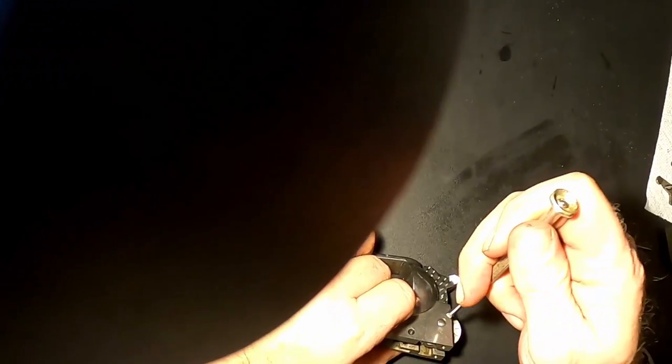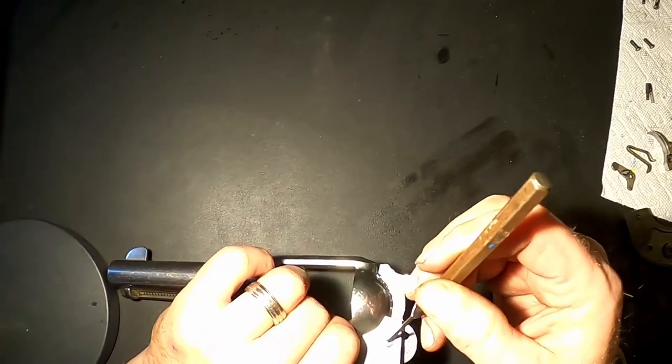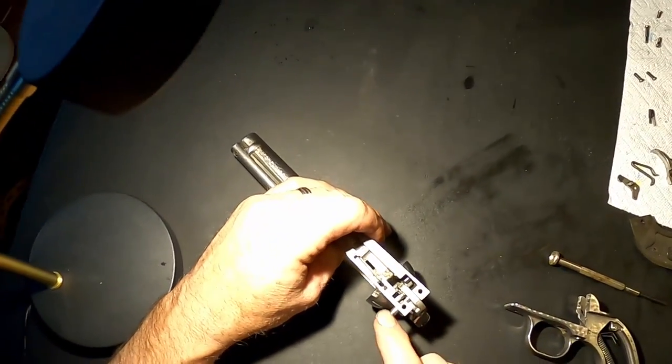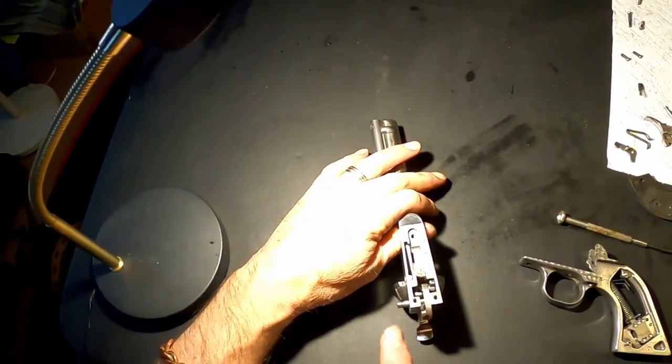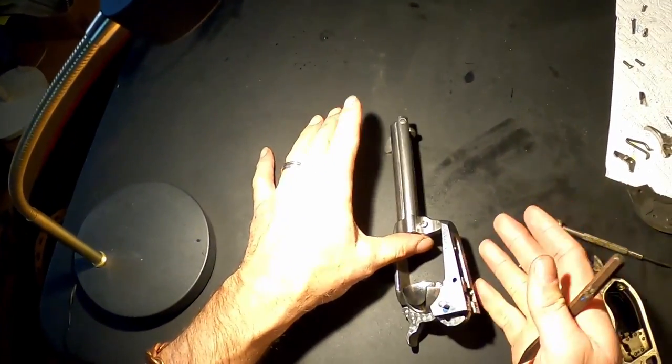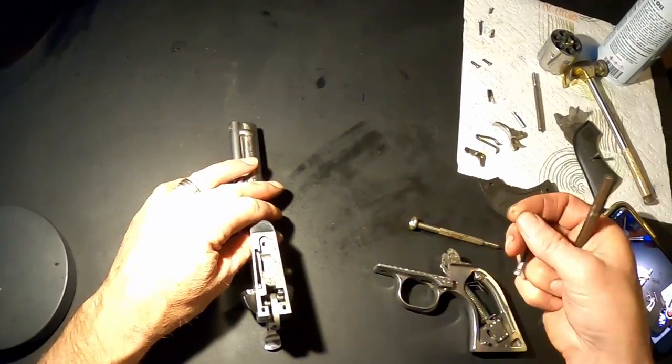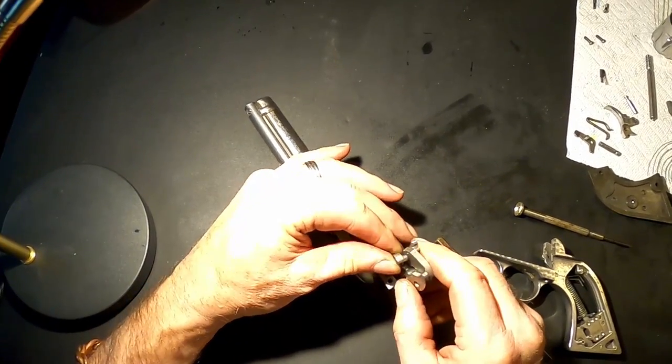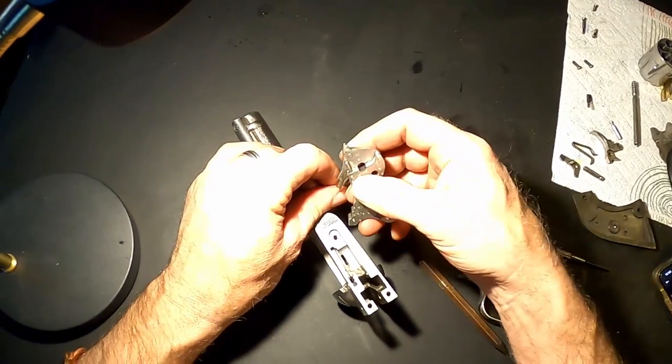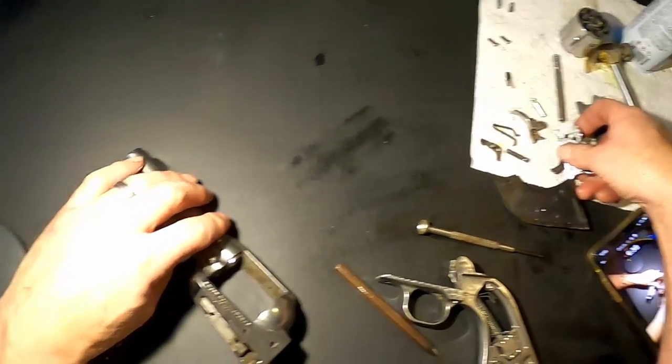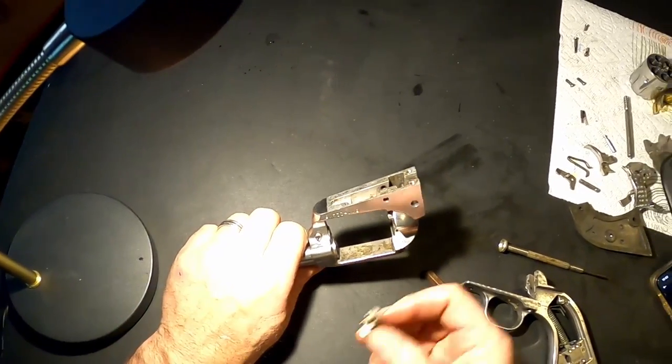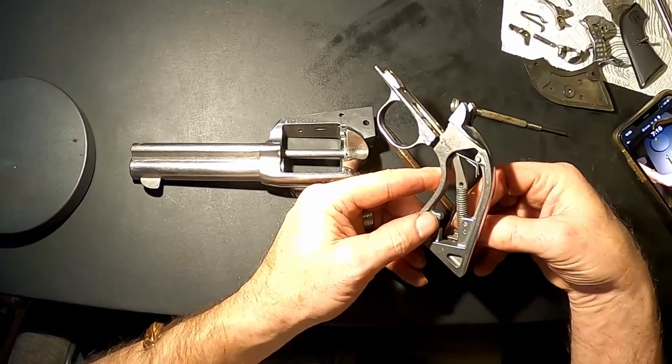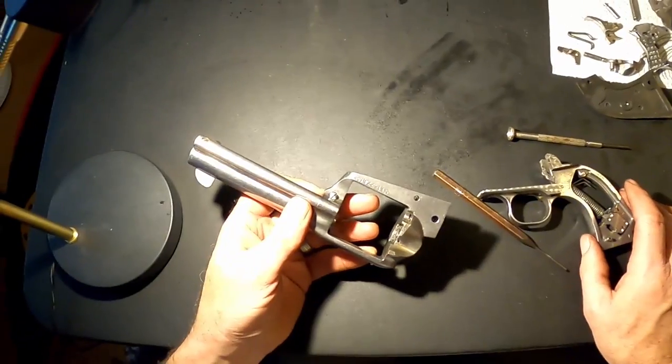The third screw we took out disengaged the pivot pin for the hammer. So we should be able to just push that out. When we put this together, we want to make sure our notch in that pin goes on the left side of the gun as it's facing now, upside down and forward. We've got that pin out. Now here comes the hammer. There's a transfer bar. And there's our pawl. And there's our gate. The gate just falls off. Those come out like that. And we'll put it back together.